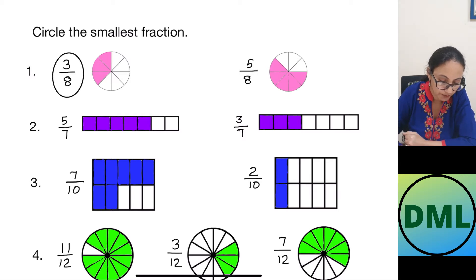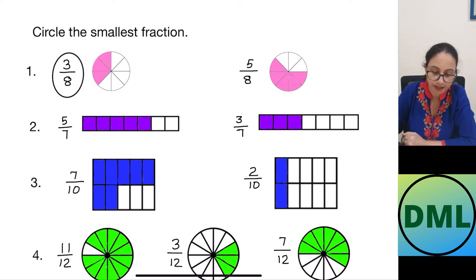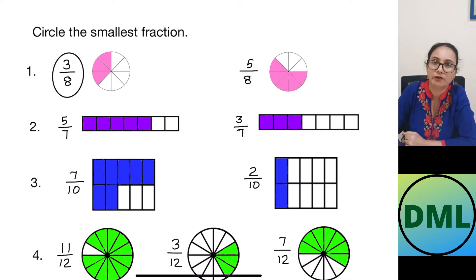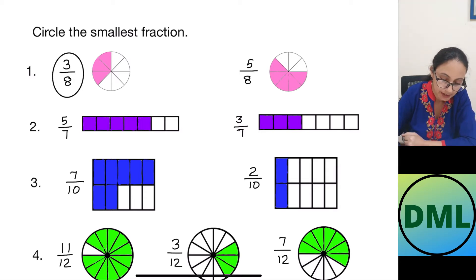Let's see the next figure. We have 5 by 7 — out of 7 parts, 5 parts are shaded. Here, out of 7 parts, 3 parts are shaded. Now what is the smallest fraction? Our denominator is same — 7. Now I will look for my numerator: it is 5 here and 3 here. Which one is smaller? 3. So that means 3 by 7 is my smallest fraction.